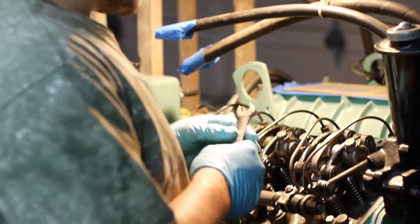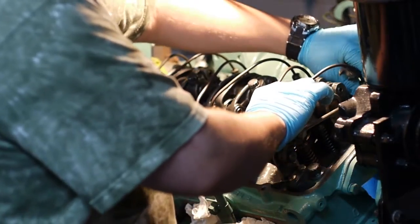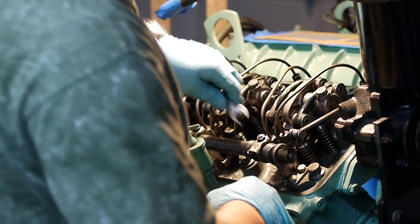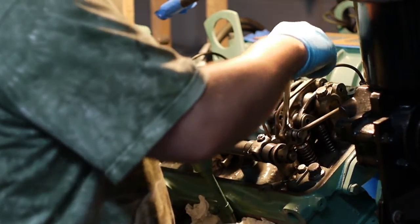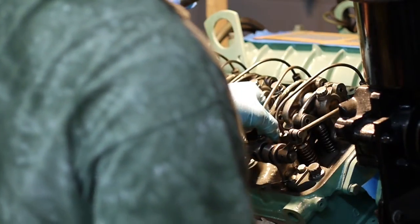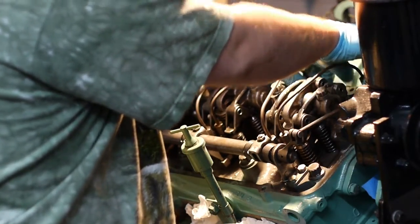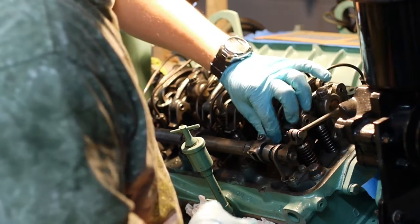Once the fuel is off we can go ahead and remove the fuel lines to the injector. If you have the right tool from Detroit Diesel this would be an easier process for torquing. Once these are removed you will be able to gain access to the rocker arms themselves.